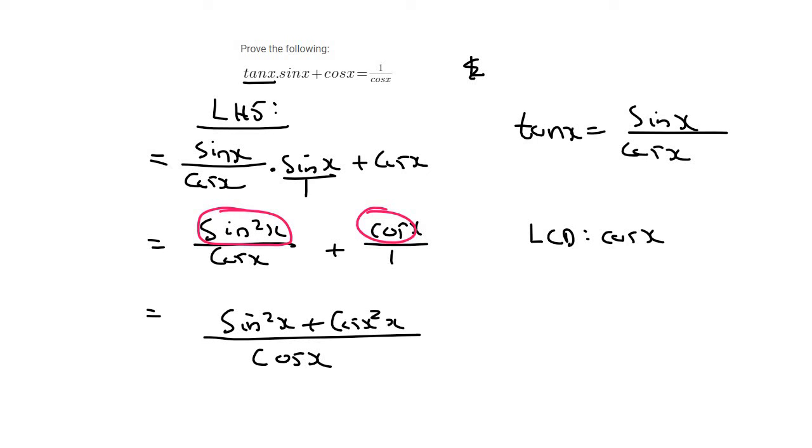And you should know that sin squared x plus cos squared x, let me write that down over here for us, that's always equal to 1. And so what we can have now is 1 over cos x. And that's exactly what we wanted. So we can say therefore, the left hand side is the same as the right hand side.